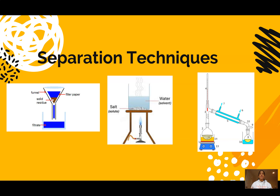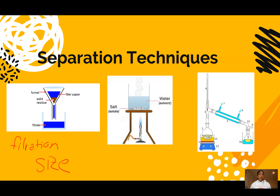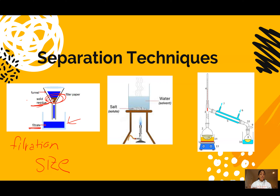Separation techniques are lab techniques we use to separate components of a mixture, and we have a variety of them. One is filtration, which is based on size. For example, with a mixture of sand and water, the sand is solid in the water, so we use a funnel and filter paper — the sand collects on the paper and the water drips through. We can use filtration when we have molecules of different sizes, particularly when we have solids and aqueous substances together.